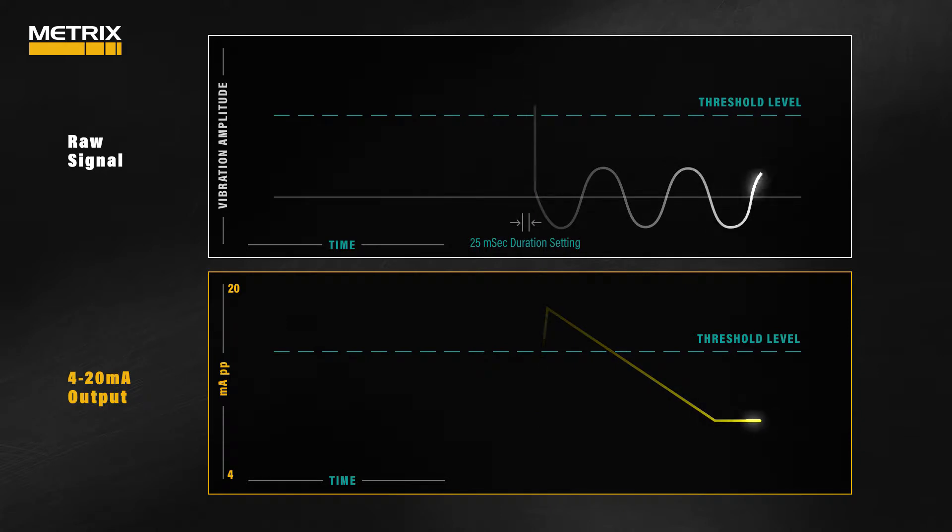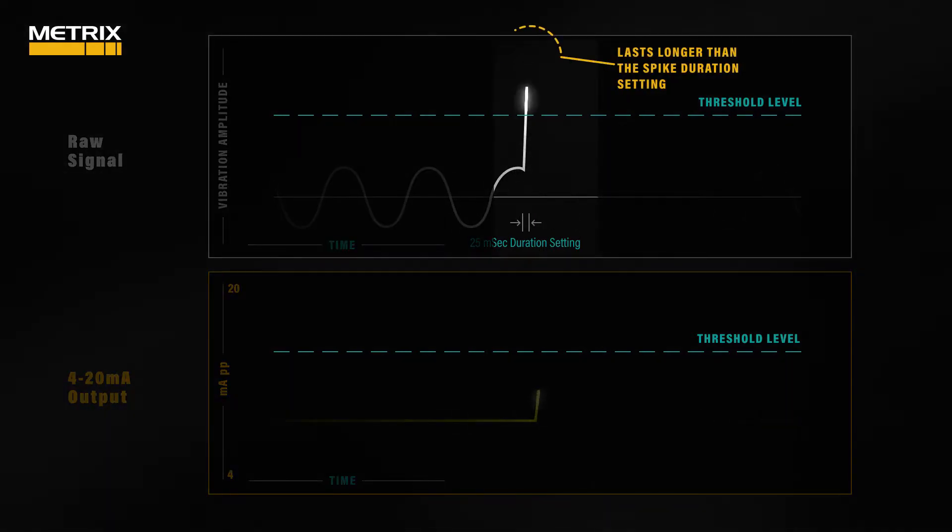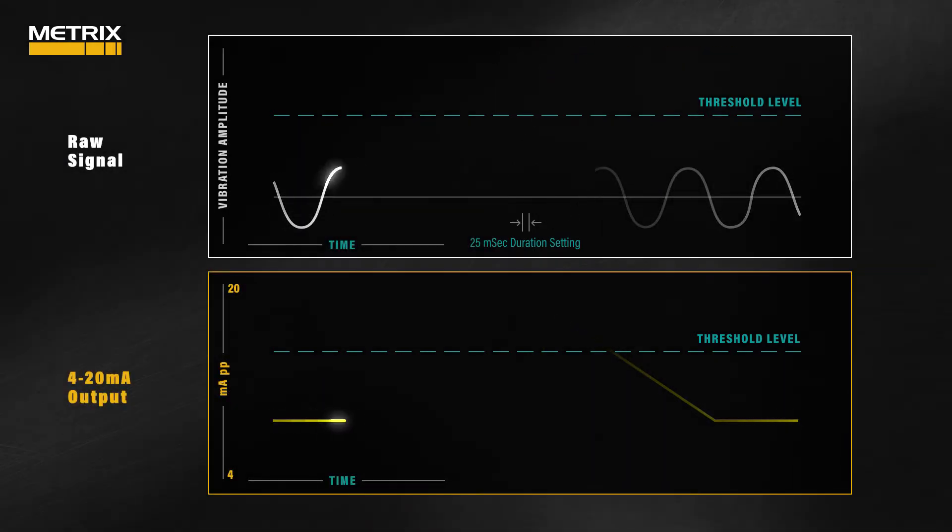Vibration amplitudes greater than the spike suppression setting that last longer than the spike duration setting will be reported normally via the 4 to 20 milliamp output.